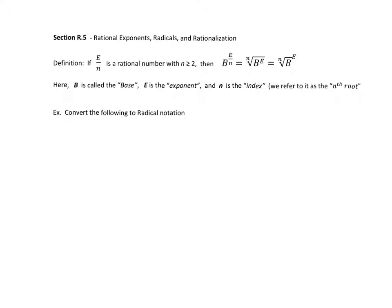Convert the following to radical notation. If I have x to the 2 fifths, this is considered rational exponent form because our exponent is a fraction. Now if we wanted to convert that to radical notation, then we could write it as the 5th root of x squared.